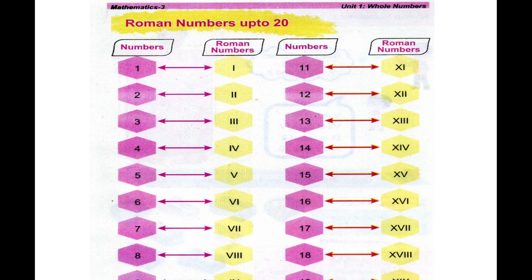Now we count the Roman numbers from 11 to 20. Here we have 10, which is X. When we add I, we have XI which is 11. X with double I, XII, we have 12. X with triple I, XIII, we have 13.